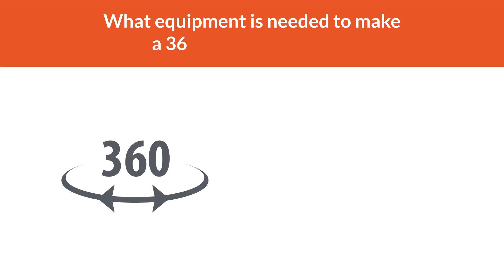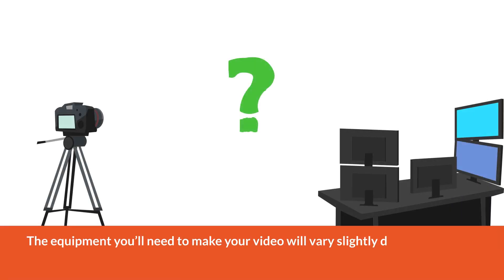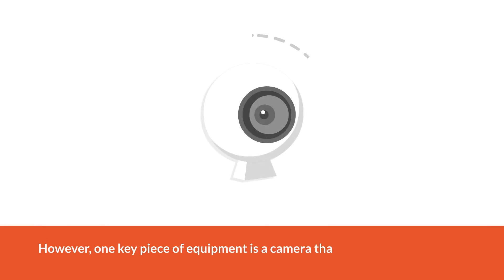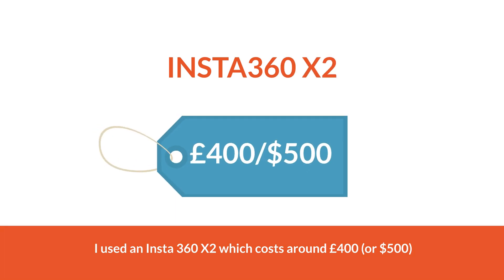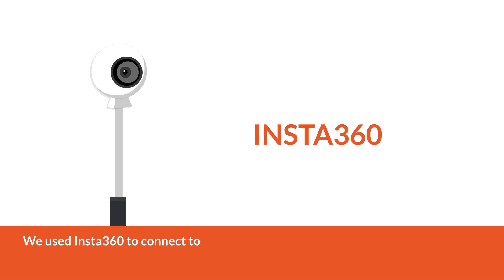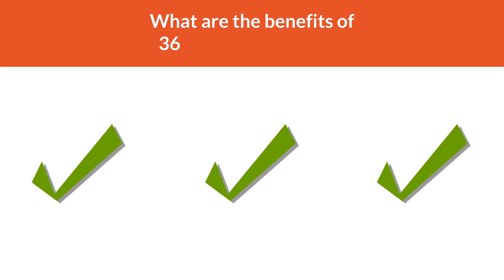What equipment is needed to make a 360 interactive video? The equipment you'll need will vary slightly depending on the type of 360 video you're making. One key piece of equipment is a camera that can film in 360 degrees. I used an Insta360 X2, which costs around £400 or $500. We used Insta360 to connect to our 360 degree camera, and pretty much used the footage as is, only trimming the beginning and end of each clip where necessary.